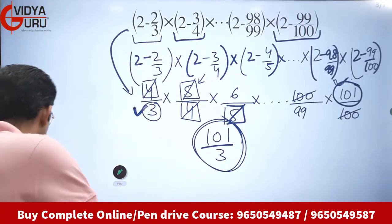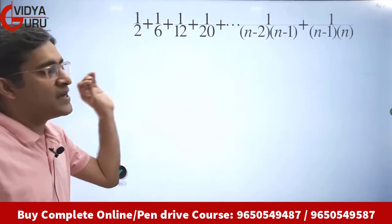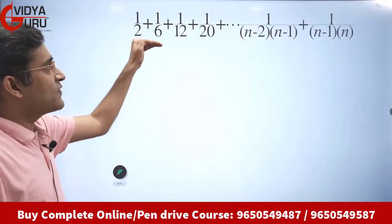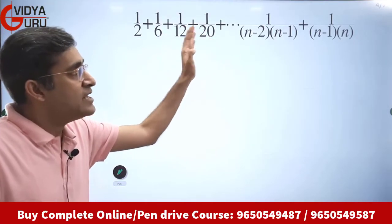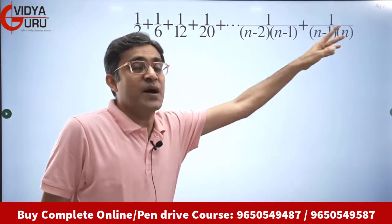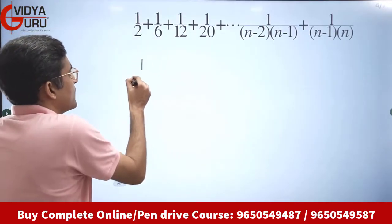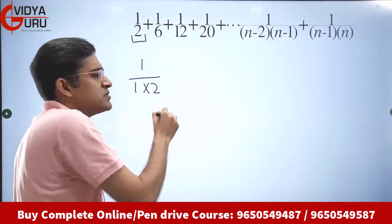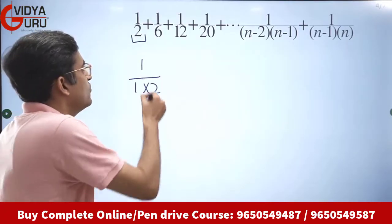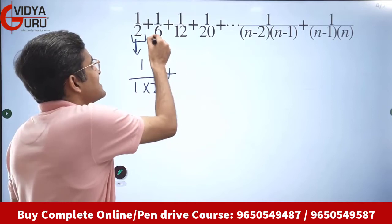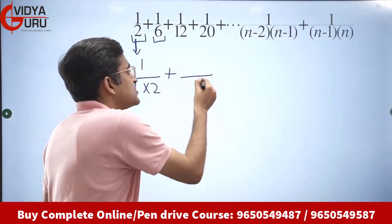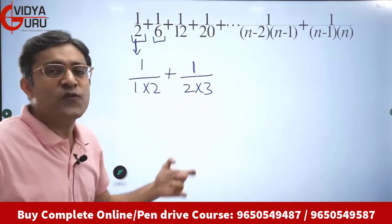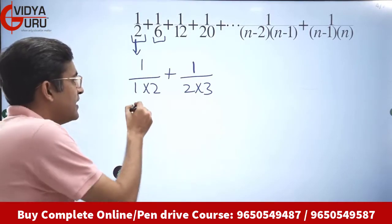Let's look at the final question. This pattern is a little different — it involves some multiplication: 1/2 + 1/6 + 1/12 + 1/20, and such a series continues till 1/((n−1)×n). In the first term, 2 can be written as 1×2. The second term has 6, and 6 can be written as 2×3, so it becomes 1/(2×3).